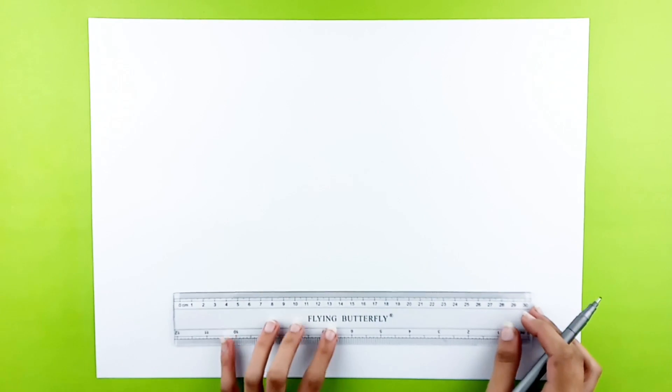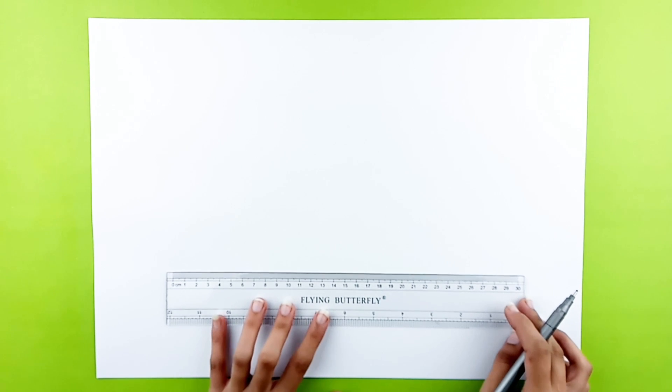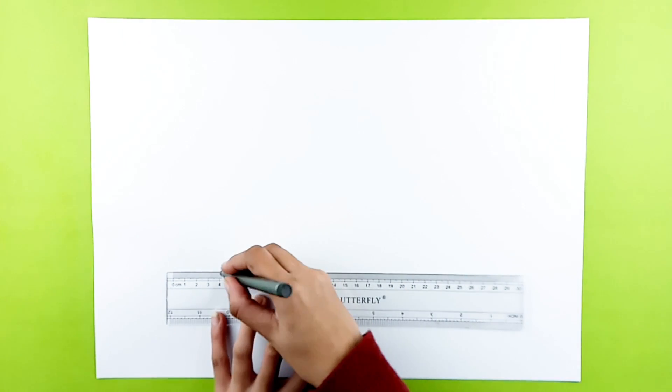Grab some pens and papers and let's get started. Start by placing your ruler just below the middle of the page and draw a line of about 20 cm.